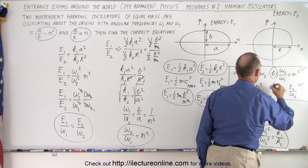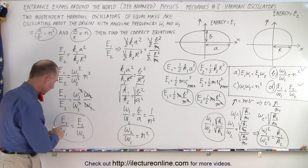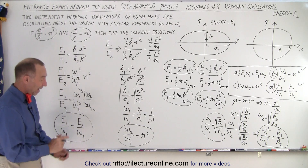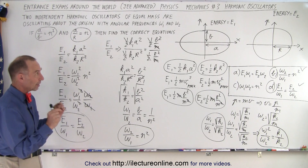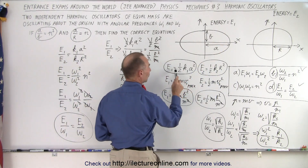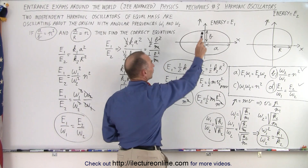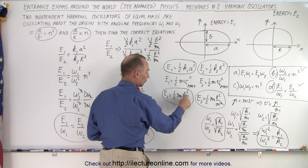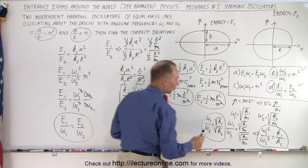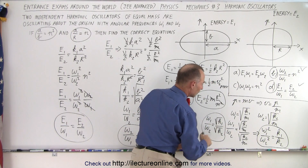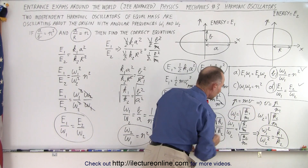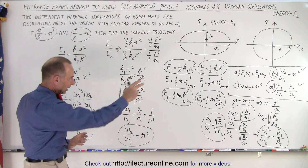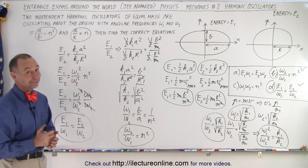So answers B and D are the two correct equations. That was quite involved, but the key is recognizing we're dealing with harmonic oscillators whose total energy can be expressed via potential or kinetic energy. Since momentum was given instead of velocity, we converted using v = p/m. We also used the relationship ω = √(k/m) and, since mass is equal for both oscillators, took ratios to eliminate m, then manipulated algebraically to identify the correct answers.